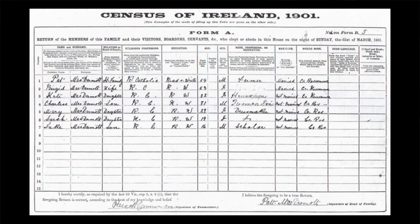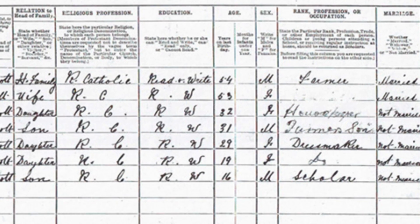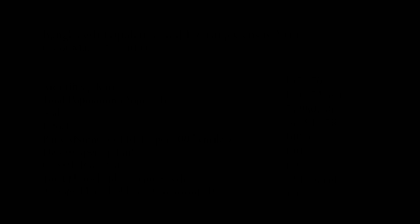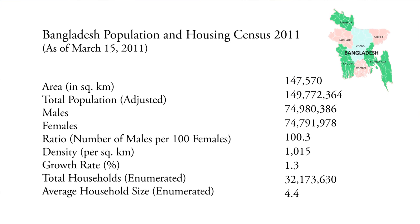Censuses have been going on for a long time. Here is a census of Ireland from 1901 — a family of seven living on a farm. One of the things I noticed, kind of interesting, is under education, the only thing that's asked is read and write. And this one's a little more up-to-date: Bangladesh in 2011, of about 149 million people.